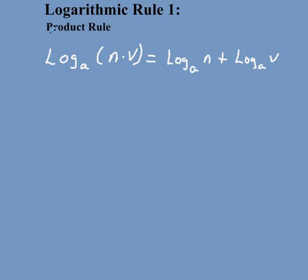The first rule is the product rule. Rule number one, product rule. What it is, is this one right here. Log a is multiplying n times v is equal to log a n plus log a v.